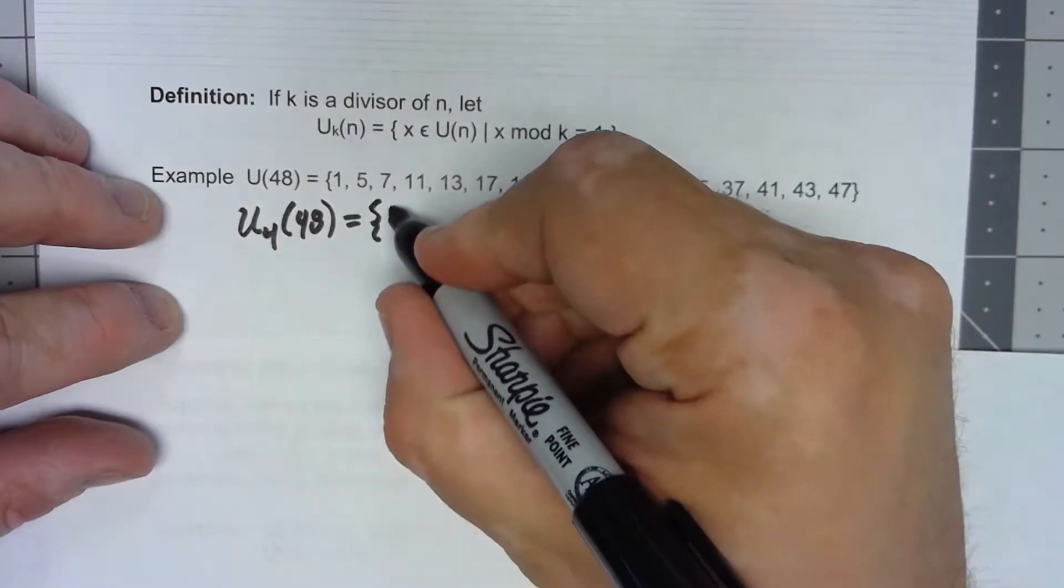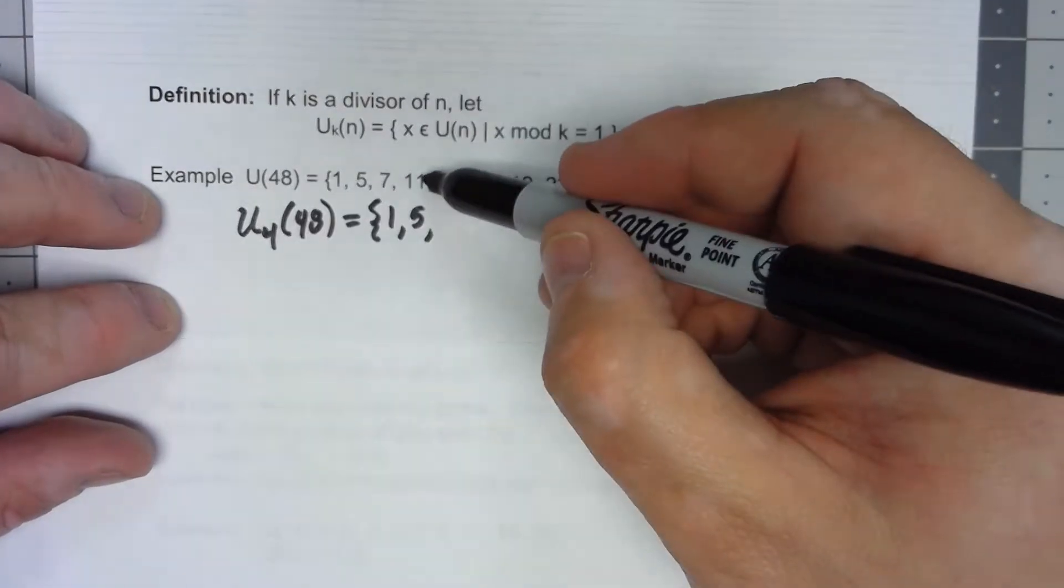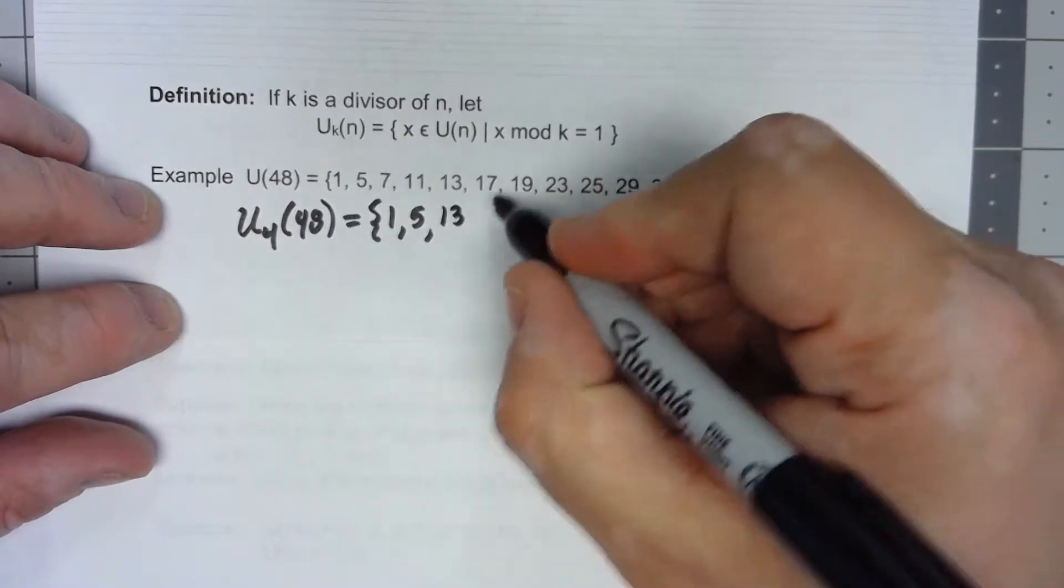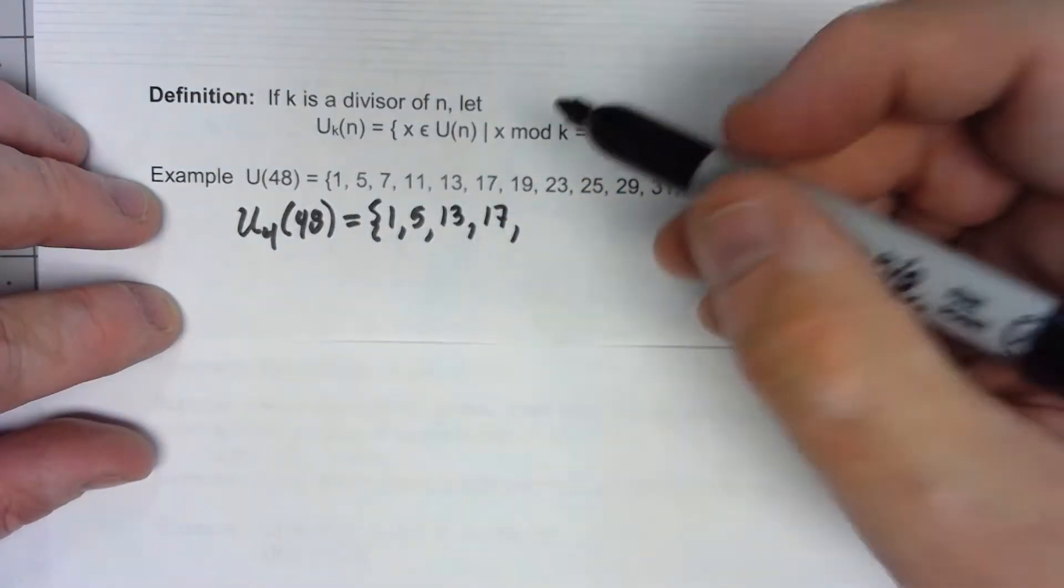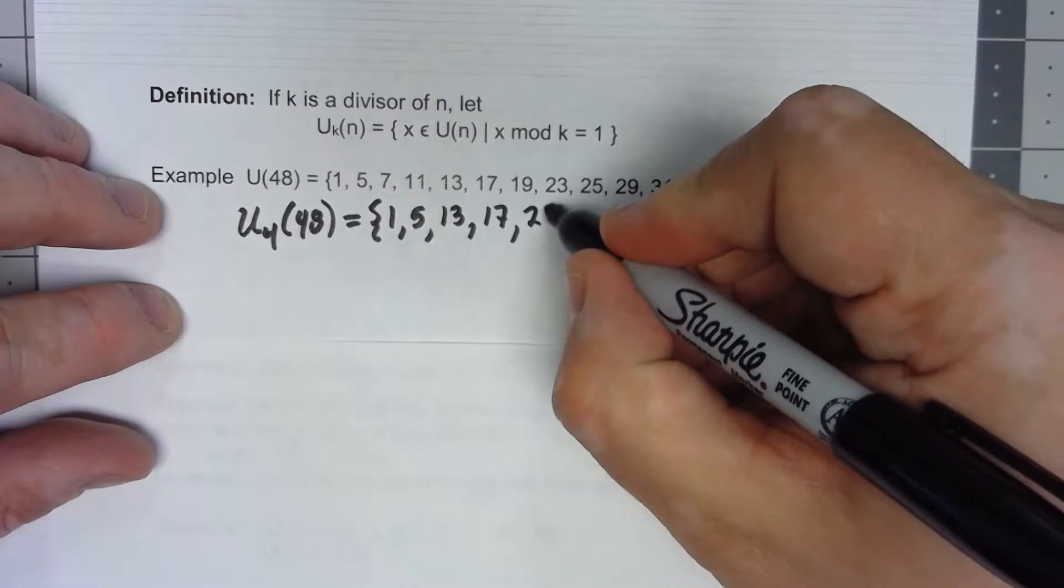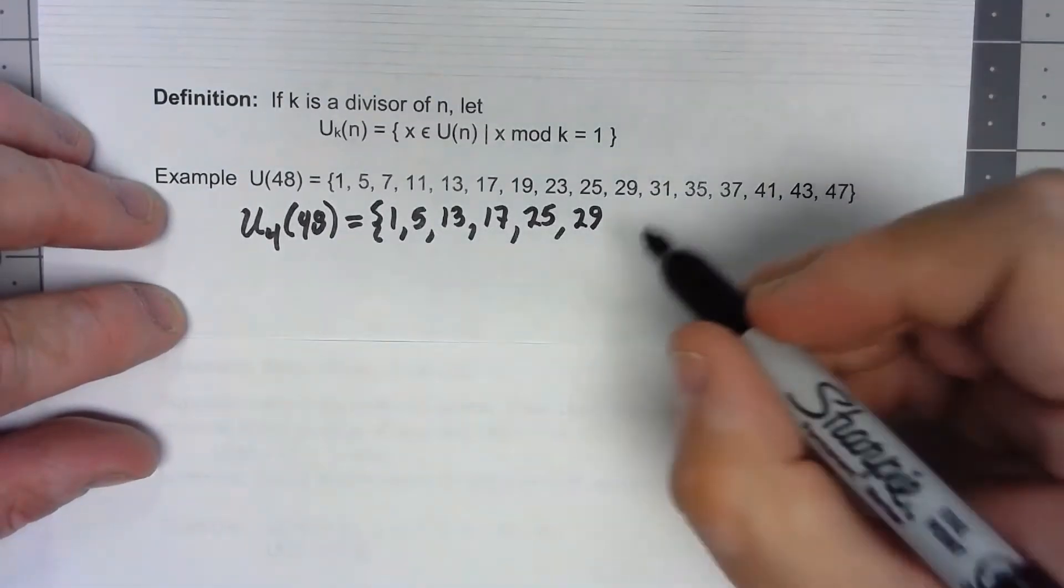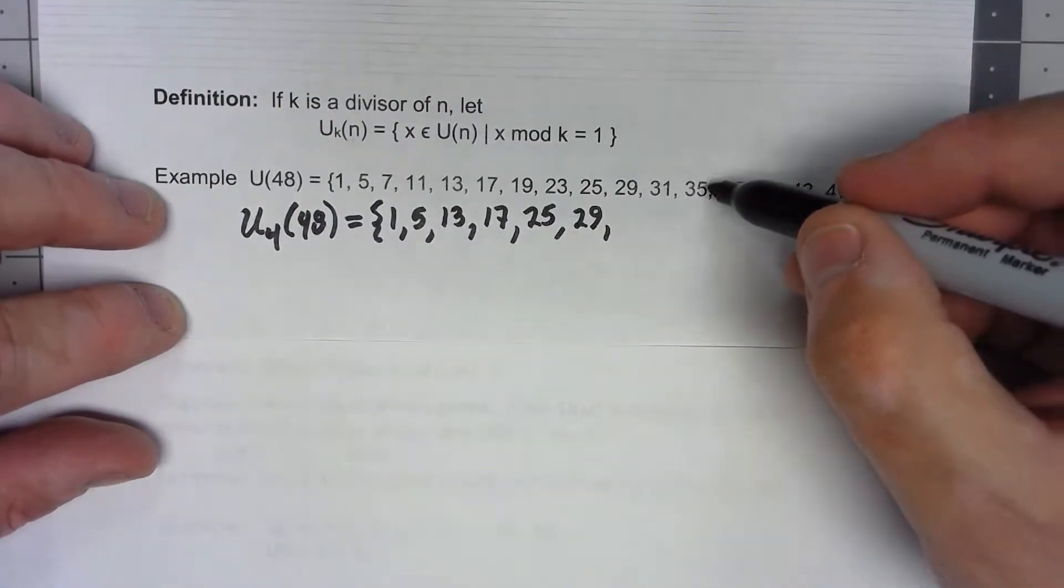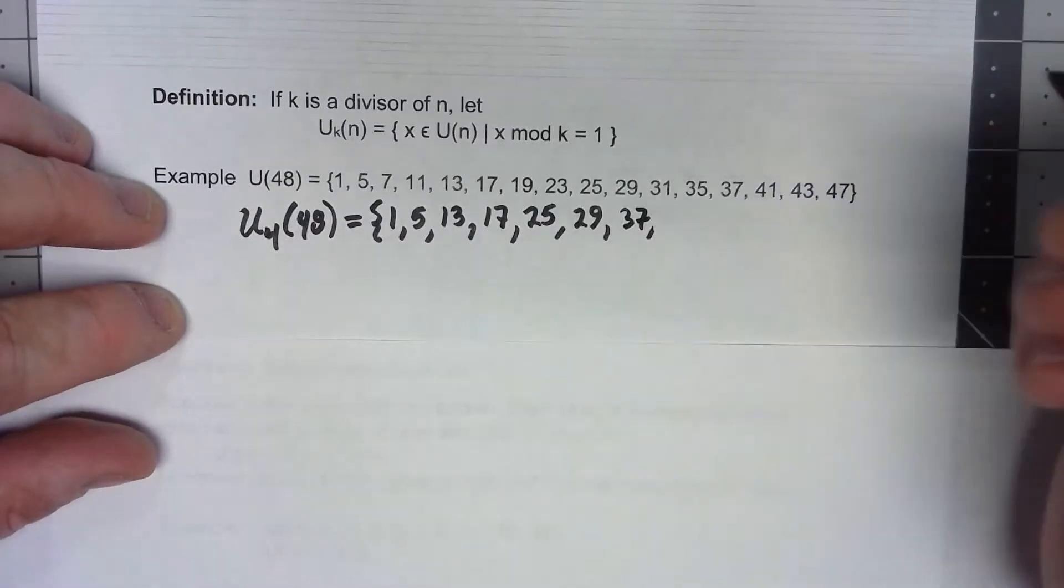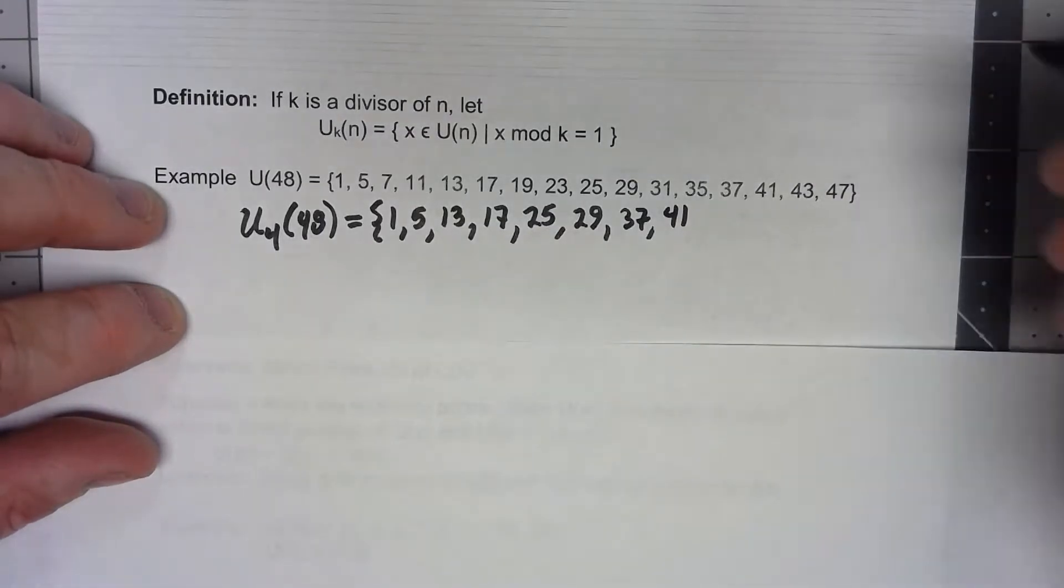So 1 mod 4 is 1, 5 mod 4 is 1, 7 mod 4 is 3, 11 mod 4 is 3, 13 mod 4 is 1, 17 mod 4 is 1, 19 mod 4 is 3, 23 mod 4 is 3, 25 works, 29 works, 31 mod 4 would be 3, 35 mod 4 would be 3, 37 works, 41 works, 43 mod 4 is 3, 47 mod 4 is 3.